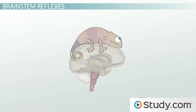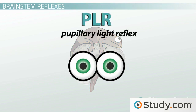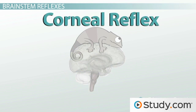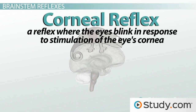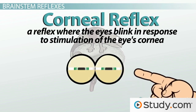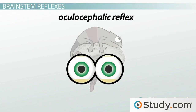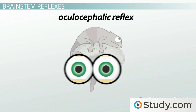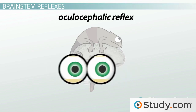Brain stem reflexes that may be tested include the PLR, or pupillary light reflex, which is where a light shown into a healthy person's eye should cause that eye's pupil to constrict, and the opposite pupil will also constrict. The corneal reflex is where the eyes blink in response to stimulation of the eye's cornea. The oculocephalic reflex is where the eyes stay focused on a certain point by moving in the opposite direction of the movement of the head.